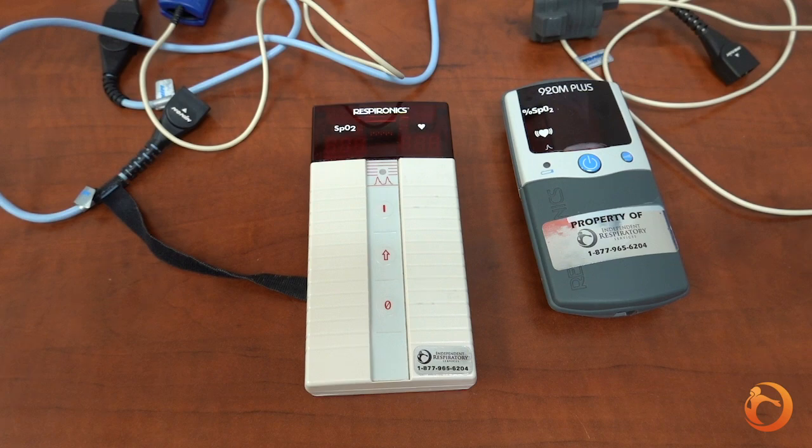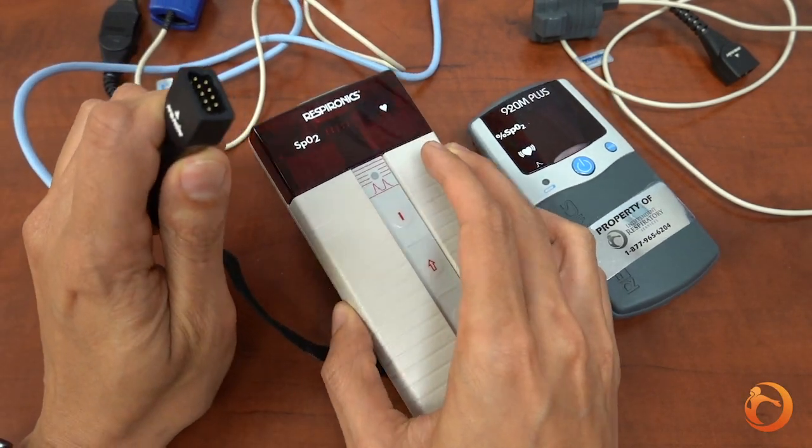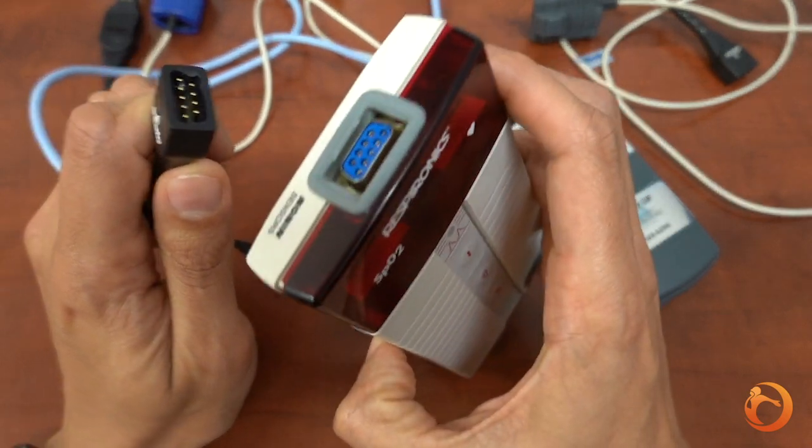Start by attaching the black end of the cable to the input of the device. The trapezoid shape will only fit in one way. Follow the pins.